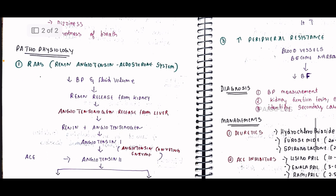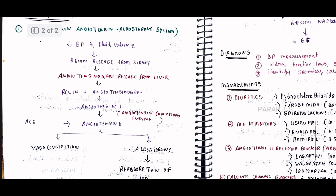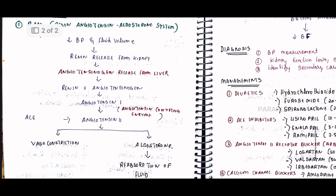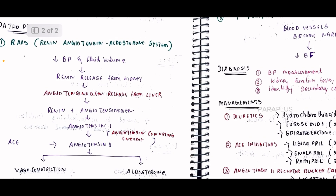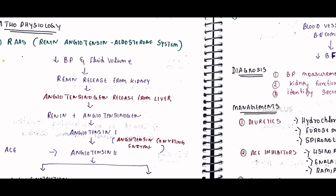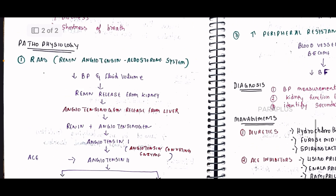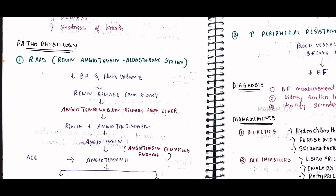Now we will talk about pathophysiology. We will cover three types of pathophysiology for hypertension. First, we will talk about RAS — the Renin-Angiotensin-Aldosterone System. This is a type of system that regulates blood pressure.